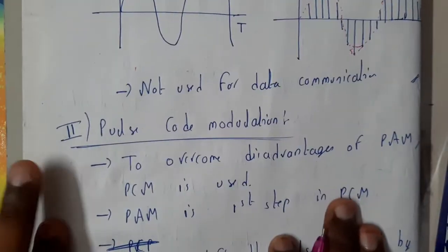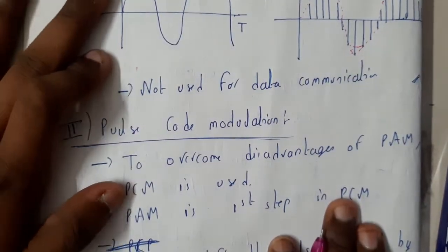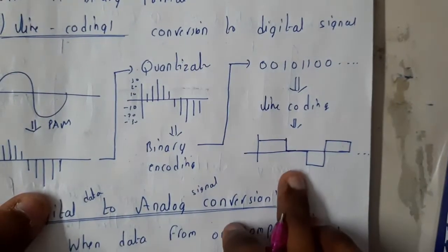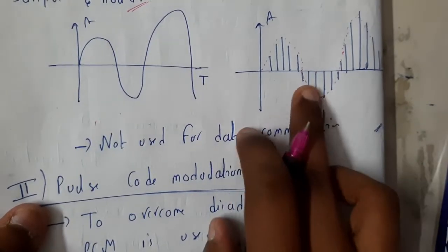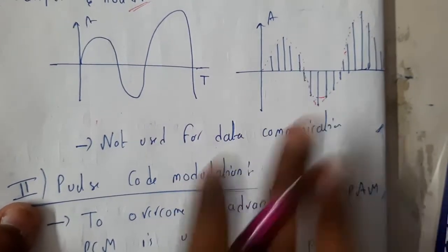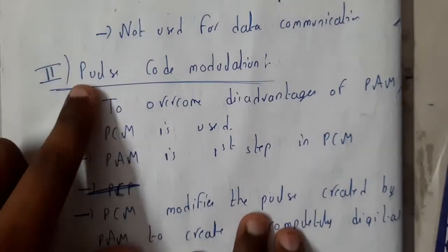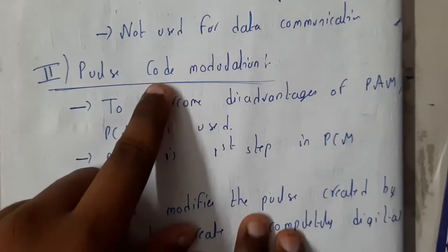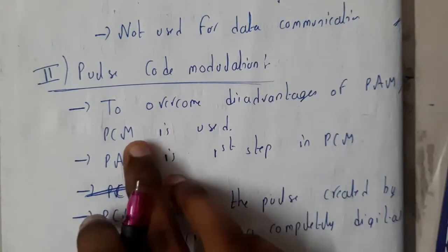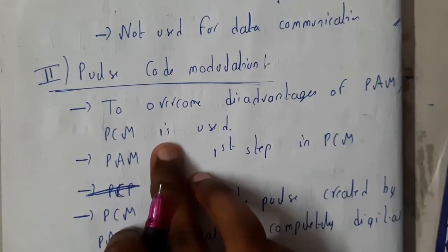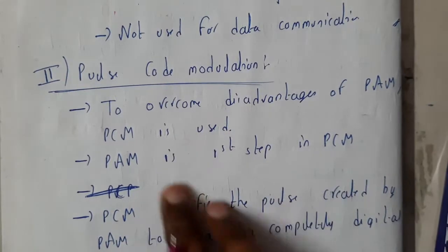The second method is a bit more advanced. PAM is not used much because it does not give accurate results. If you observe, the output is not perfectly accurate, and that is the reason why we do not prefer this method on its own. If you continue with a few more steps, you will get a more accurate result.